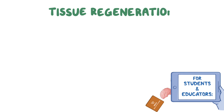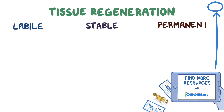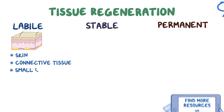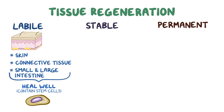Some tissues regenerate more easily than others, and the regenerative capacity of tissue is classified as labile, stable, and permanent. Labile tissues like skin, connective tissue, and small and large intestine heal extremely well because they contain stem cells, which are undifferentiated cells that can divide and renew the cells that have died.